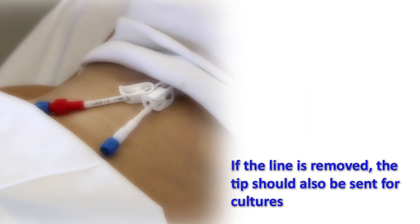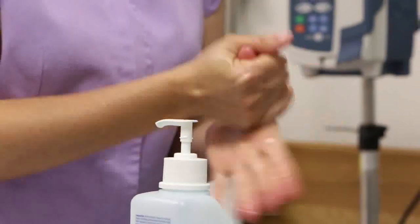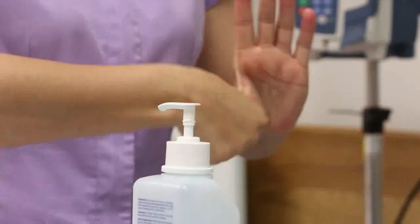If the line is removed, the tip should also be sent for cultures. Clean your hands with alcohol hand rub by applying two pumpfuls of alcohol and carefully rubbing your hands until the alcohol has fully evaporated.